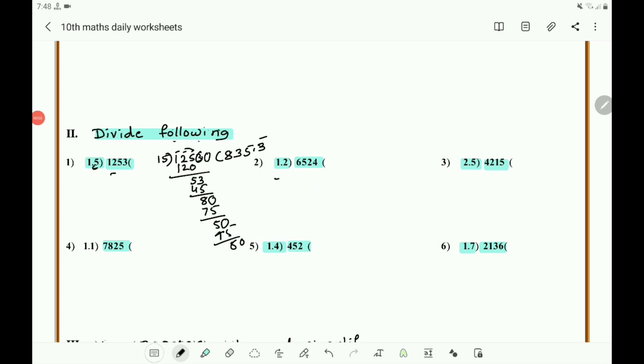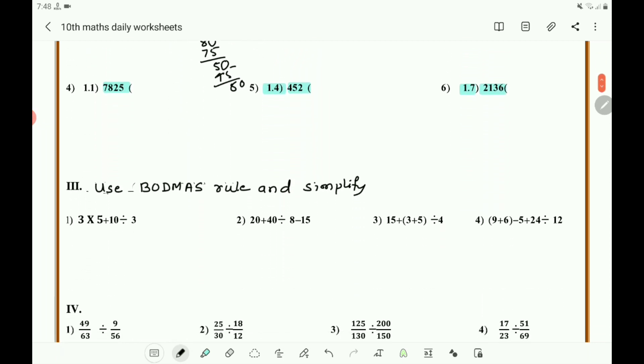Follow the same steps for the other divisions. Then take the third one: use BODMAS rule and simplify. You know BODMAS rule - B stands for bracket, O for of, D for division, M for multiplication, A for addition, and S for subtraction. If there is a bracket you must open it first, next do division, then multiplication, then addition, and last subtraction.